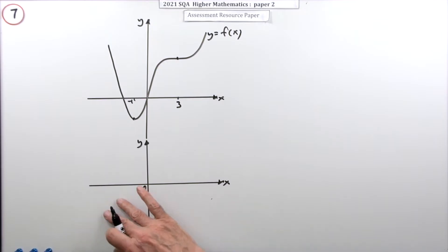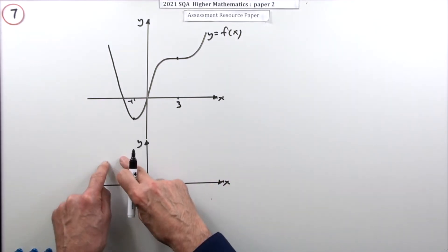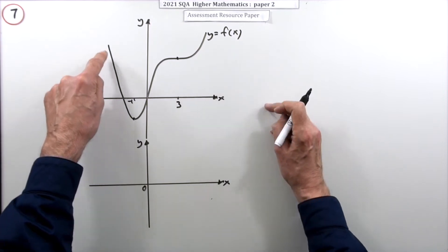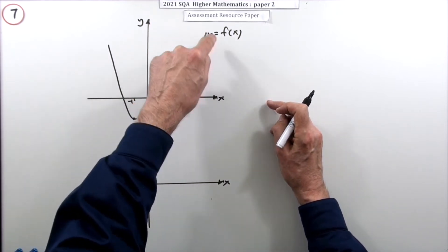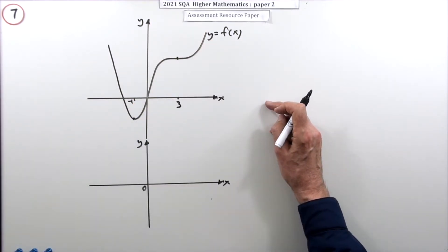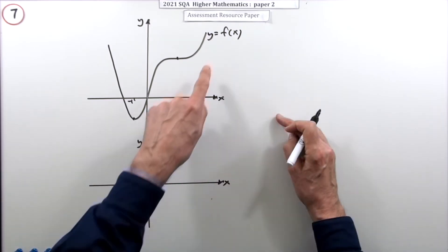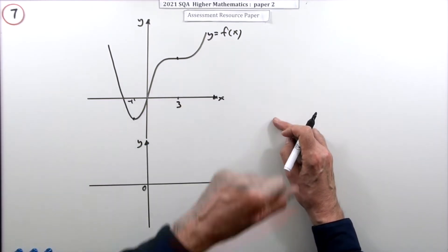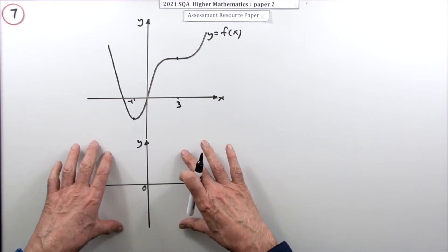So that means what you're going to plot here are going to be the values of the gradients of the original graph. All these values are the y coordinates of f of x. Here you have to plot the values of the gradients, the derivatives of f of x.